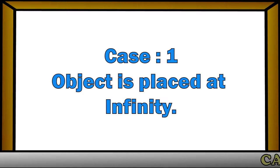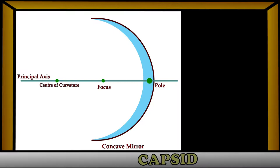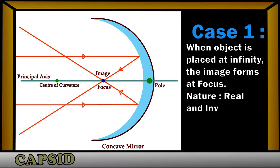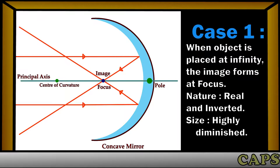Case 1: the object is placed at infinity, or the ray of light coming from infinity. When the rays of light come from infinity, after reflection through a concave mirror, they meet at the focus. So the final image forms at the focus. The nature of the image will be real and inverted, and the size of the image will be highly diminished.